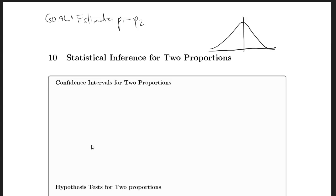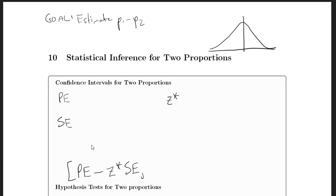With confidence intervals for two proportions, it works the same as before. We have a point estimate, a multiplier z-star, and a standard error. The confidence interval is the point estimate minus z-star times the standard error, up to the point estimate plus z-star times the standard error.